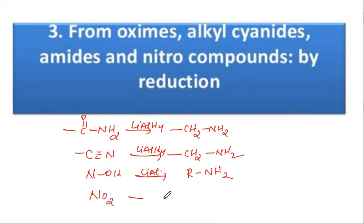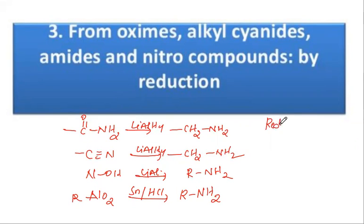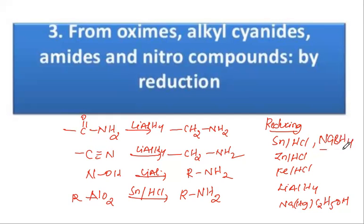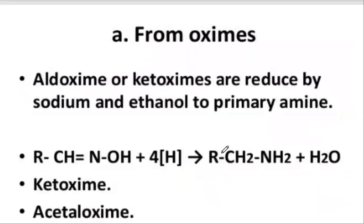Nitro compounds also, when reacted with tin and HCl, can produce amines. Students, remember the most important thing in this chapter — we use several reducing agents: tin and HCl, zinc and HCl, iron plus HCl, lithium aluminium hydride (the strongest reducing agent), sodium amalgam with ethyl alcohol, and sodium borohydride. All these reducing agents supply hydrogen atoms.